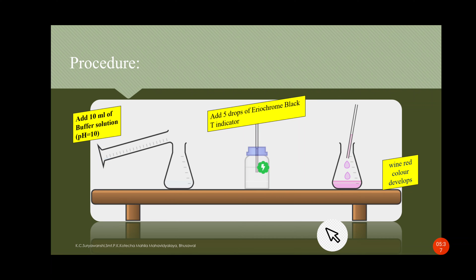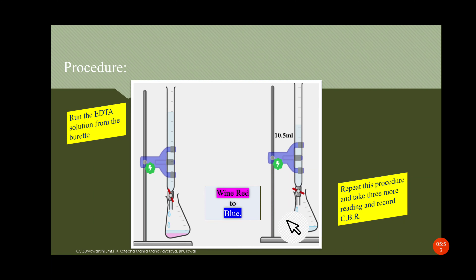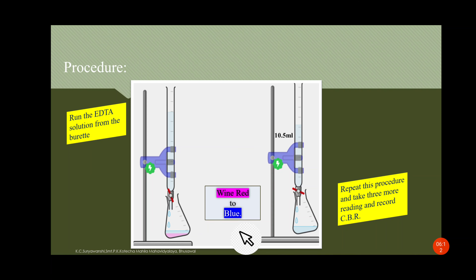Add 10 ml of buffer solution having pH 10, then add 5 drops of Eriochrome Black T indicator. The solution becomes wine red in color. Then run the EDTA solution from the burette dropwise. The solution changes from wine red to blue — this is the endpoint. When the solution turns blue, the burette reading is 10.5 ml; note this down.